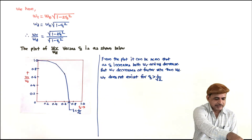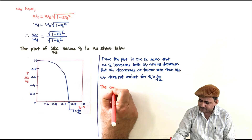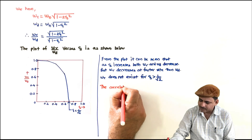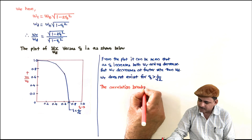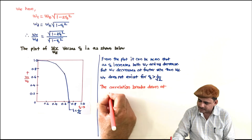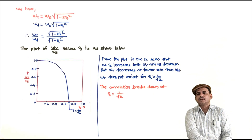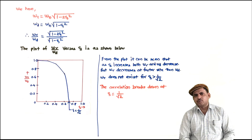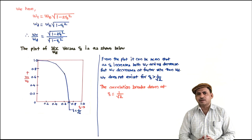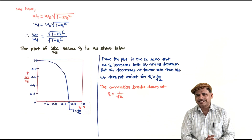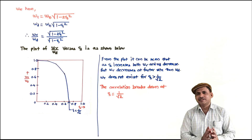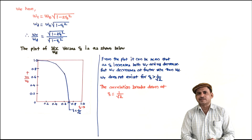So the correlation breaks down at zeta equal to 1 by root 2. In this series of 3 to 4 lectures, we have now covered all frequency domain specifications and their correlation, formulation, and derivations. In the next couple of lectures, we will solve numerical examples on frequency domain specifications. Thank you.